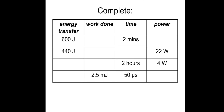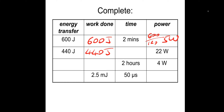Complete this table — pause the video and I'll show you the answers. If energy transferred is 600 joules, work done is also 600 joules. Power equals energy divided by time, so 600 divided by 2 minutes, which is 120 seconds, gives 5 watts. For the next row, energy is 440 joules and work done is 440 joules. Time equals energy divided by power: 440 divided by 22 gives a time of 20 seconds.